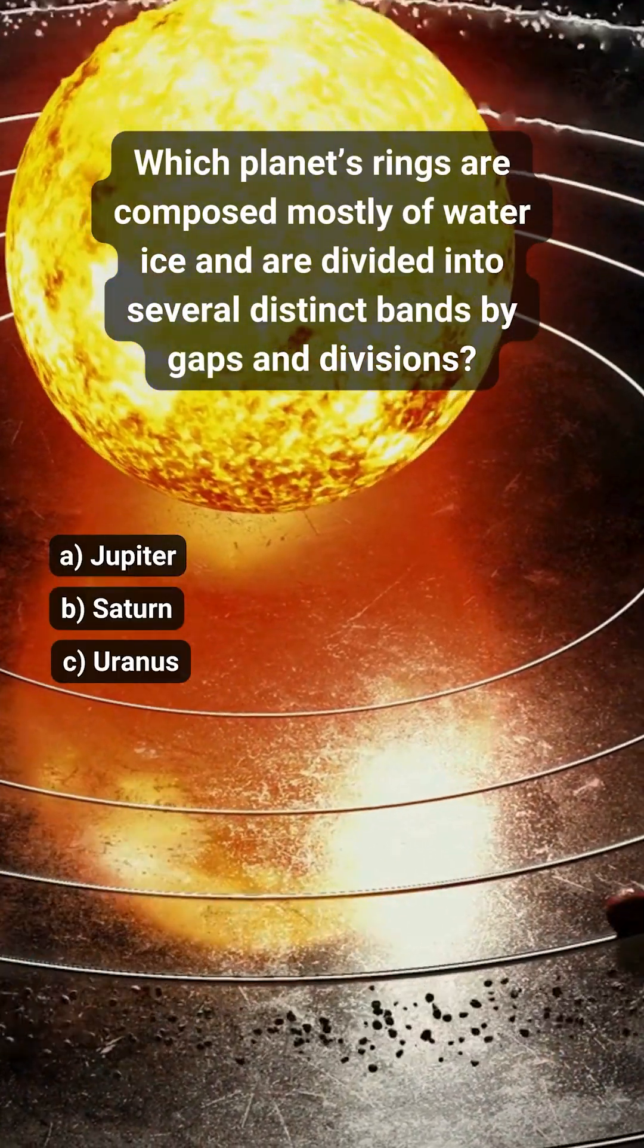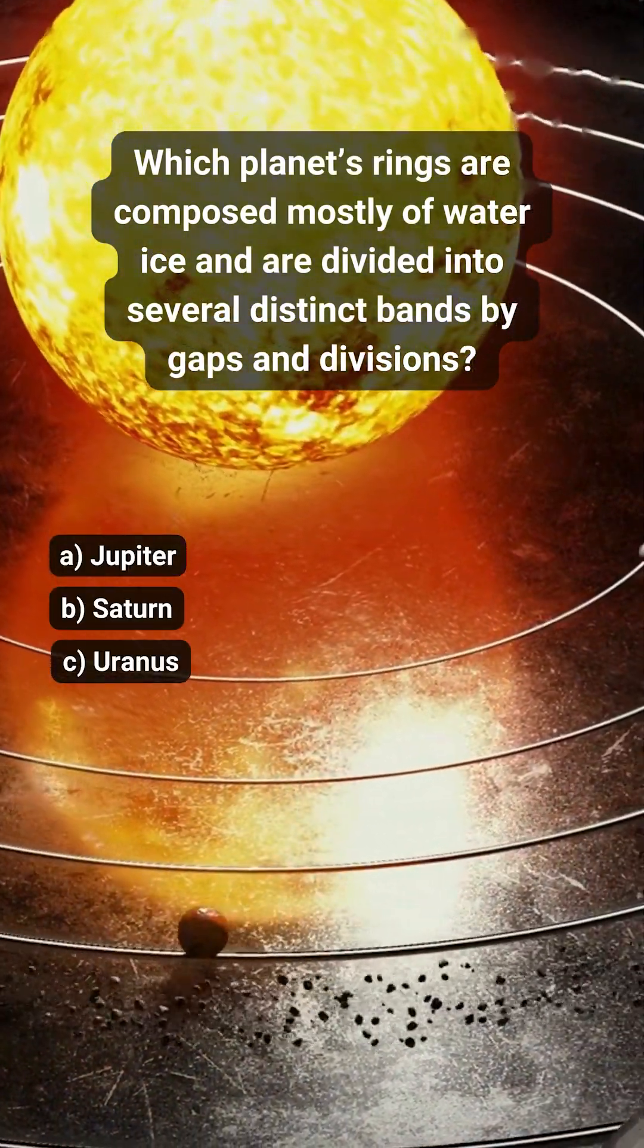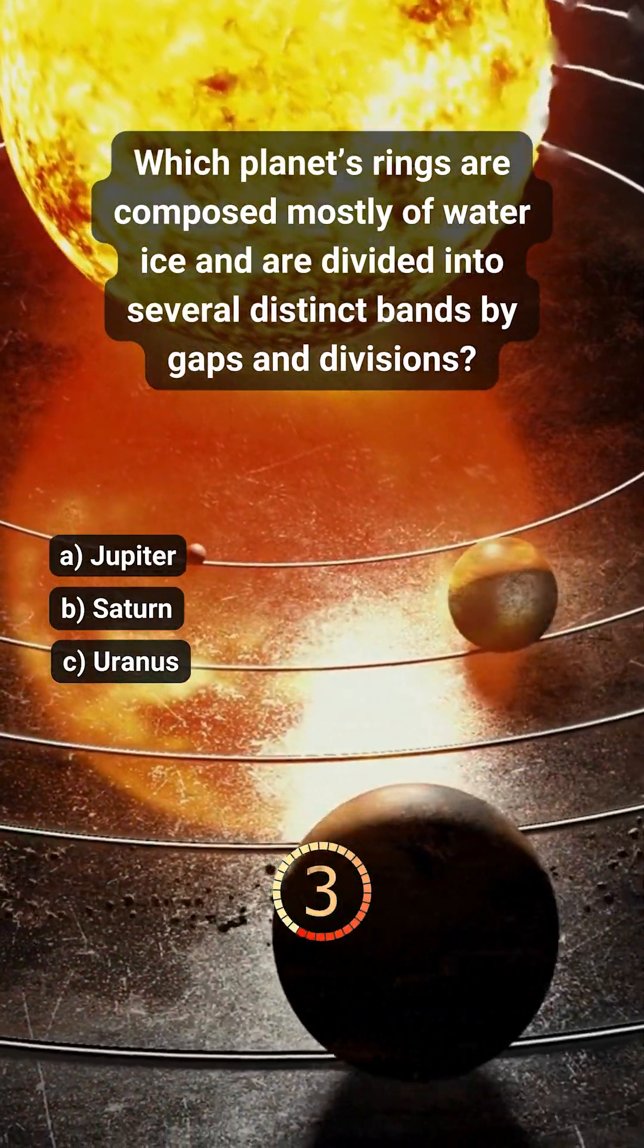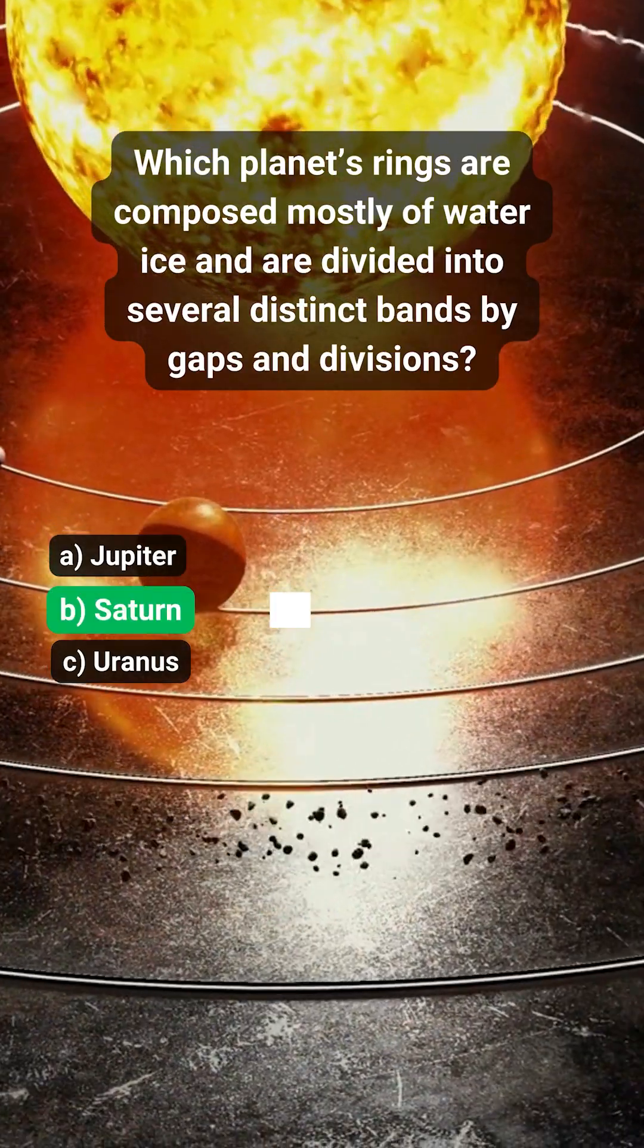Which planet's rings are composed mostly of water ice and are divided into several distinct bands by gaps and divisions? B. Saturn.